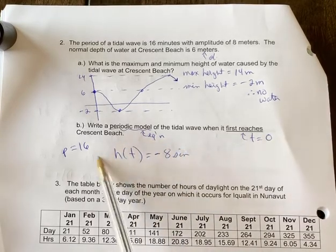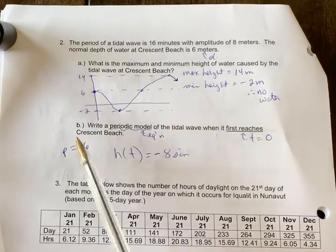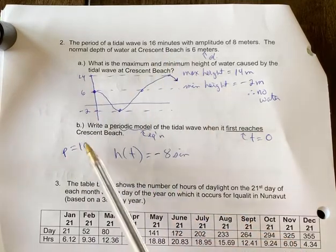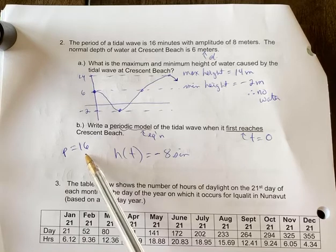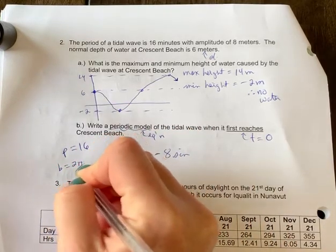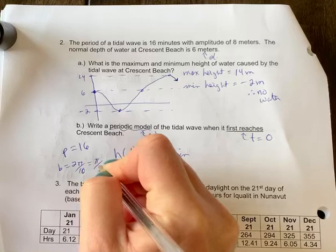So that's what I had started to do here. Now I was just discussing where the period equals 16, so if the period equals 16, the B value is 2 pi over 16, which is pi by 8.